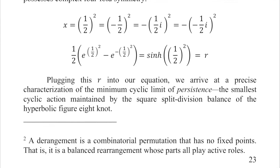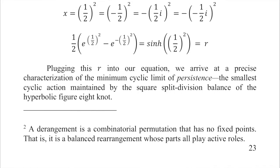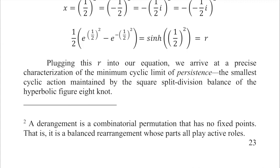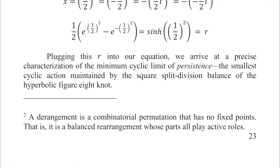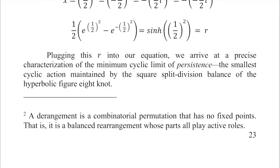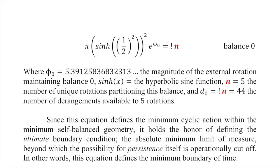A derangement is a combinatorial permutation that has no fixed points — it is a balanced rearrangement whose parts all play active roles; nobody holds still. Now that we've characterized the geometry of this minimal derangement structure, we can characterize balance 0 explicitly. We get an equation where rotation 0 can be defined explicitly to any significant digit: 5.391258368332313… and on. This defines the magnitude of the external rotation maintaining balance 0, and we can now identify specifically the exact geometric external expression of this balance.